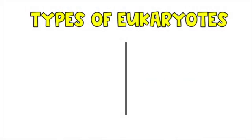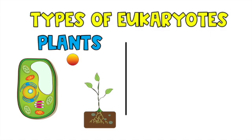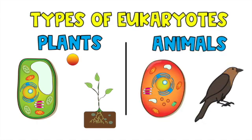Our two types of eukaryotes are plants and animals. Plant cells are a little bit different than animal cells, and in another video we're going to talk about the key differences between plant and animal cells. These two types of cells have a lot in common and also a lot that's different. The first thing I notice is the shape — they're different.